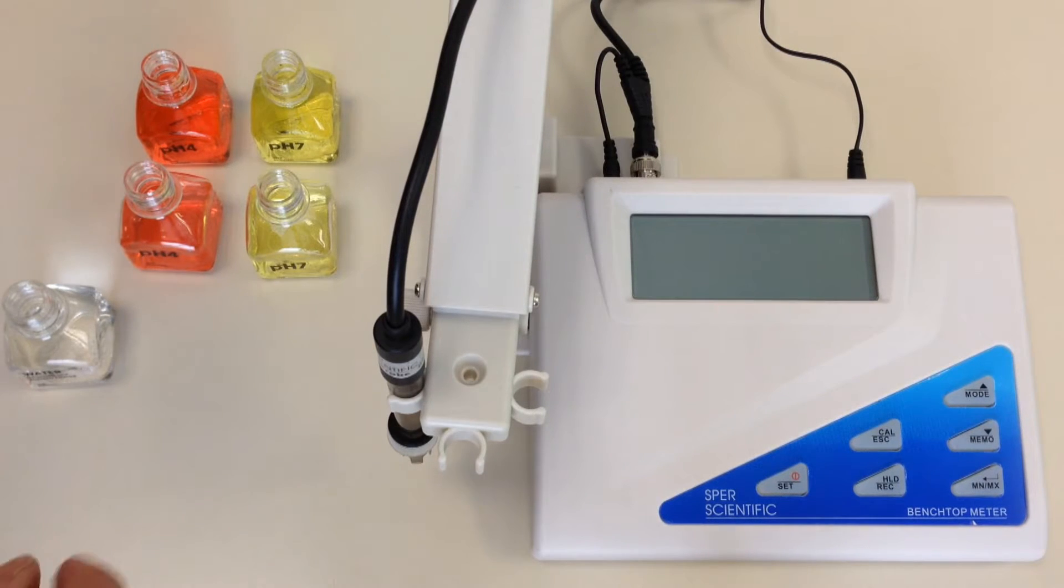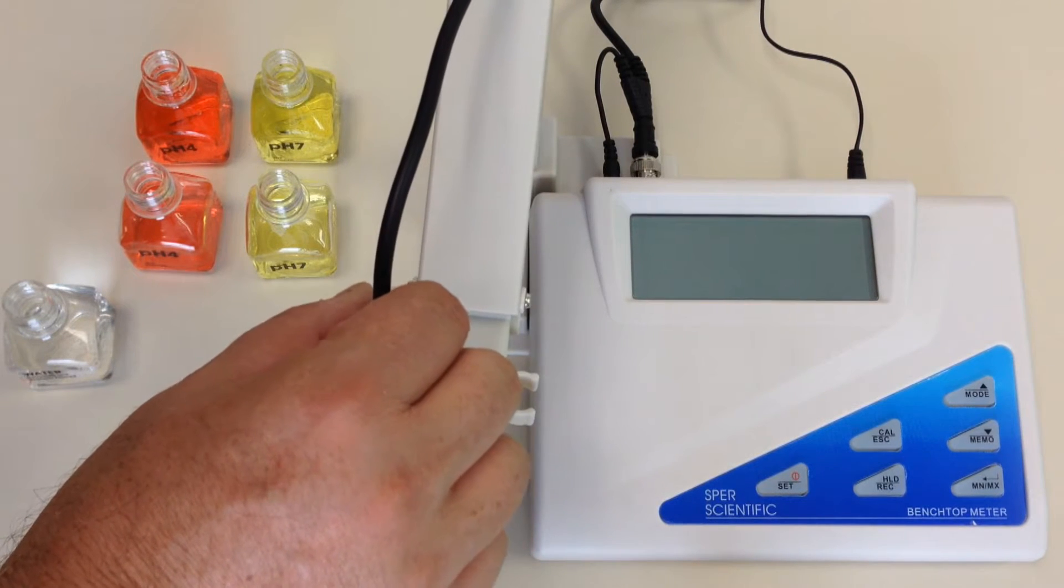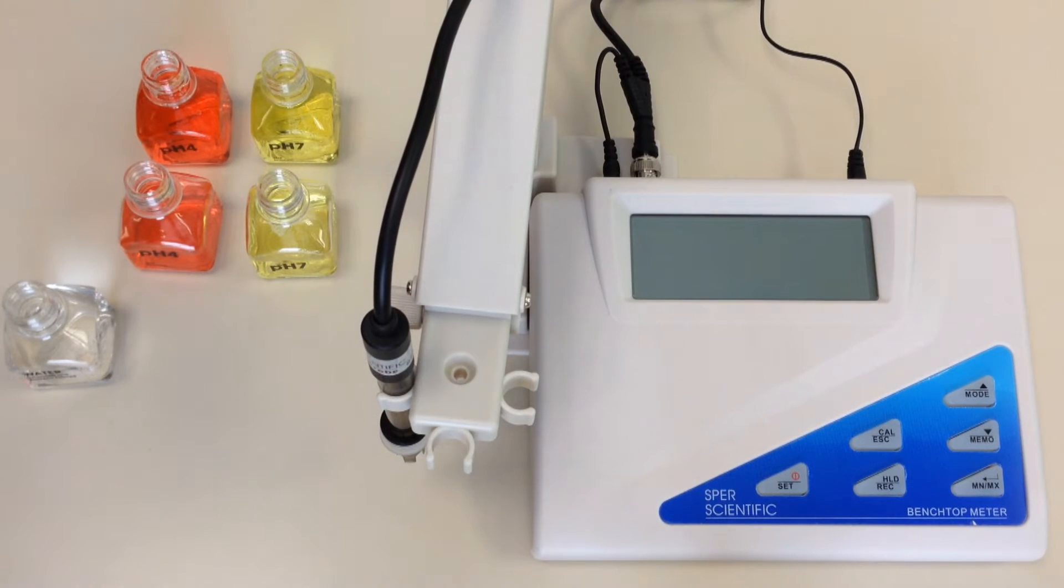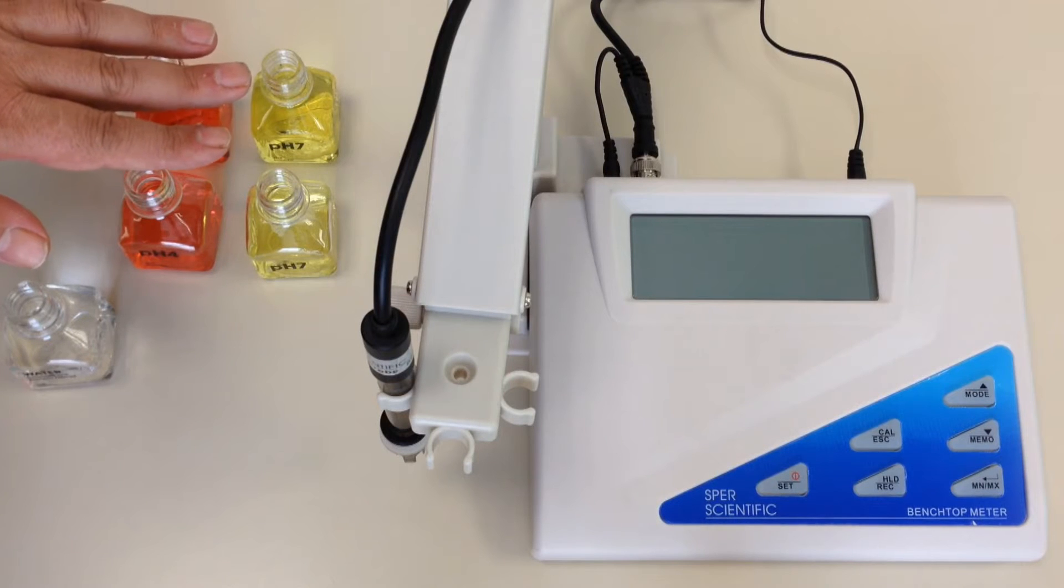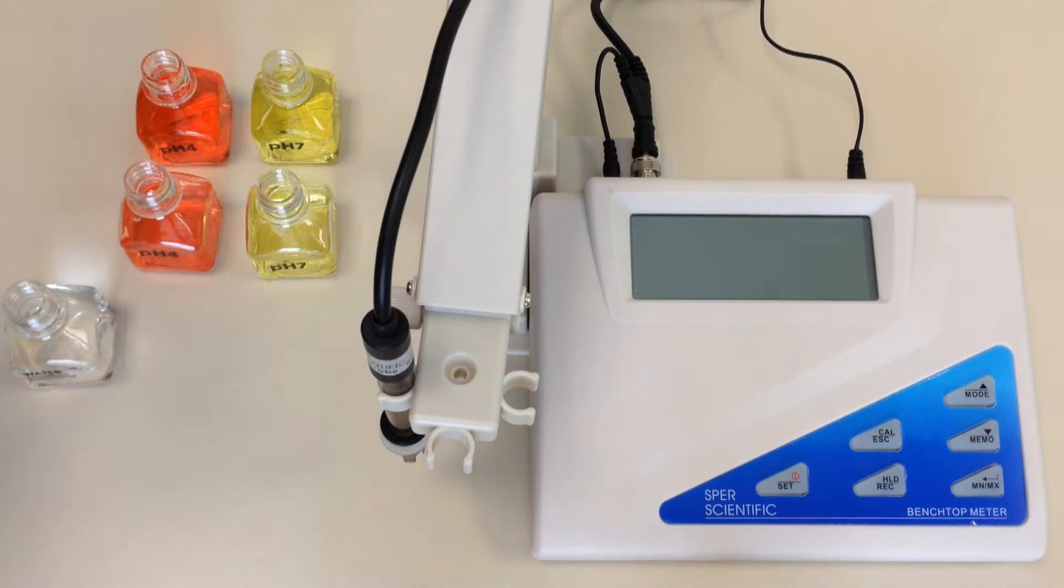First of all, I want to point out that we are using a probe that comes with this particular benchtop that handles what's called ATC or automatic temperature compensation. If you are not using a probe that does automatic temperature compensation, please follow the instructions in the manual. We are also using standard buffer solutions, and if you are using NIST buffer solutions, please pay note to how we change the different features on this benchtop meter.